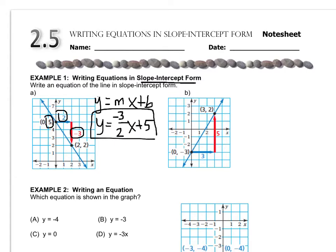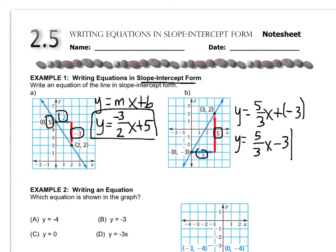Next question. If you want to try it on your own, go for it. In the formula, y equals mx plus b, the slope is 5 over 3, x, and I could write plus negative 3, which is the y-intercept, but the best way to write that is y equals 5 thirds x minus 3. And that's all you do.